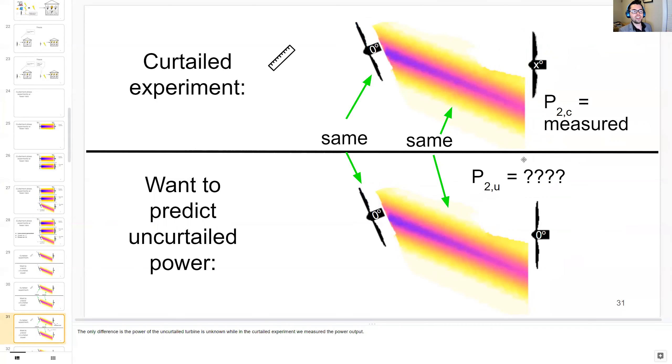The only thing we don't really know is the operation of the uncurtailed downstream turbine. We have measured the curtailed downstream turbine though, so the next few steps will be finding how we convert these measured outputs into this estimation prediction.